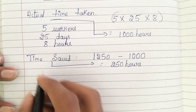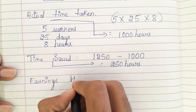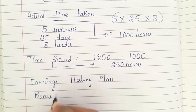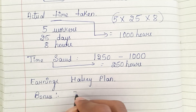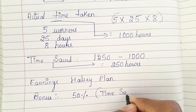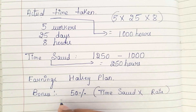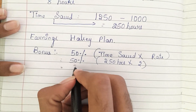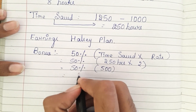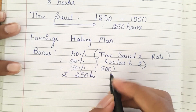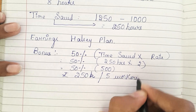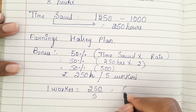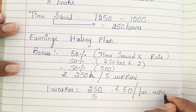Now let us calculate earnings under the Halsey plan. The bonus formula is 50% of time saved × rate: 50% of (250 × 2) = 50% of 500 = ₹250 for 5 workers. For one worker: 250 ÷ 5 = ₹50 bonus per worker.